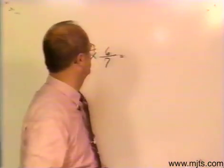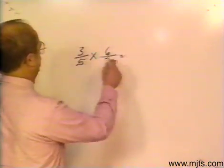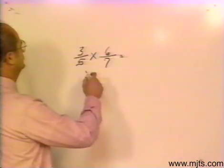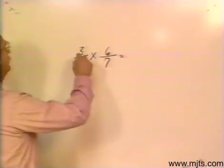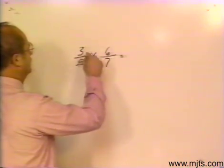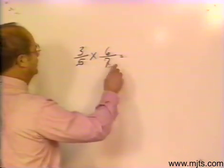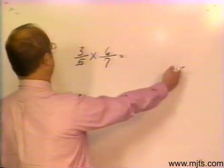The multiplication of fractions is probably the most simple. Here you see we have two fractions. We would multiply the numerators, multiply the denominators, and then if possible we will reduce.